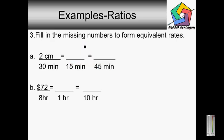The directions are telling us to fill in the missing numbers to form equivalent rates. We have two centimeters over thirty minutes equals blank over fifteen minutes equals blank over forty-five minutes. We've got to first figure out this: fifteen goes into thirty how many times? Two times. So fifteen goes into thirty two times, and two times two is four. So we have four centimeters over fifteen minutes.